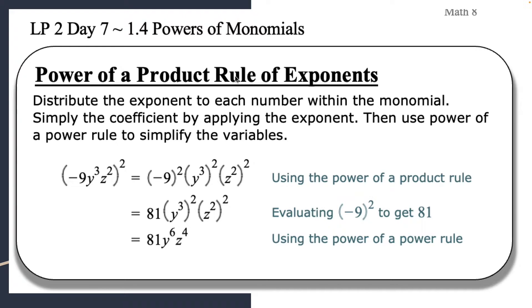So we're kind of combining the last couple rules that we learned into one rule, so that we can do a little bit of a grander problem here, or expression. So we want to distribute the exponent to each number within the monomial. So that's kind of the first thing that you want to look at. We're literally distributing, that means kind of giving that exponent to each piece.